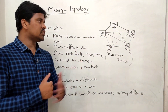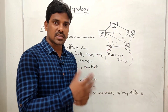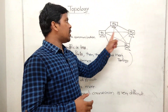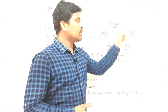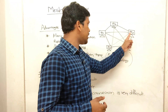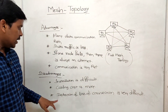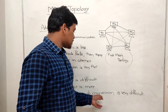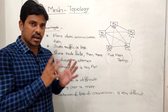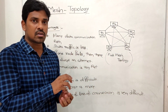Disadvantages of mesh topology: installation is difficult because of the large number of cable connections from node to node. The cabling cost is high. Detection of a lost connection is also very difficult when there are many cable connections.